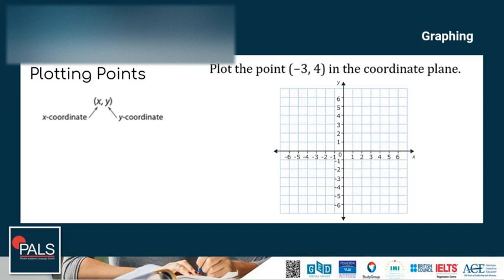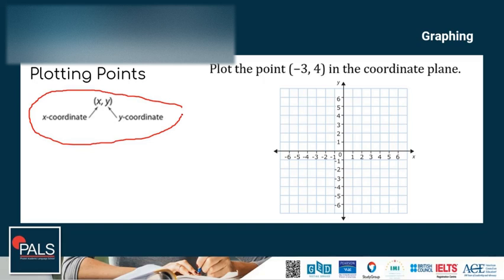Graphs of equations are made up of many individual points. To know how to graph a line or other equation, you must be comfortable graphing these points — the ordered pair, the x-coordinate and the y-coordinate. Points in the coordinate plane are called ordered pairs, and ordered pairs always have an x-value first and a y-value second. These values tell you where the point is located in the coordinate plane.